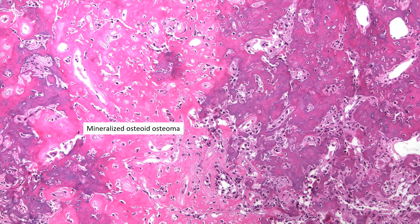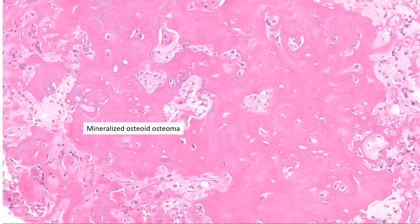Like every other tumor, there are variations on this theme. Occasionally you'll encounter an osteoid osteoma with a lot more osteoid and very little vascularized stroma. The bulk of the tumor is composed of bone — some of it mineralized, some unmineralized. In a heavily mineralized osteoid osteoma, if you look closely, you will still see some vascularized stroma and occasional osteoblasts as well as osteoclasts.